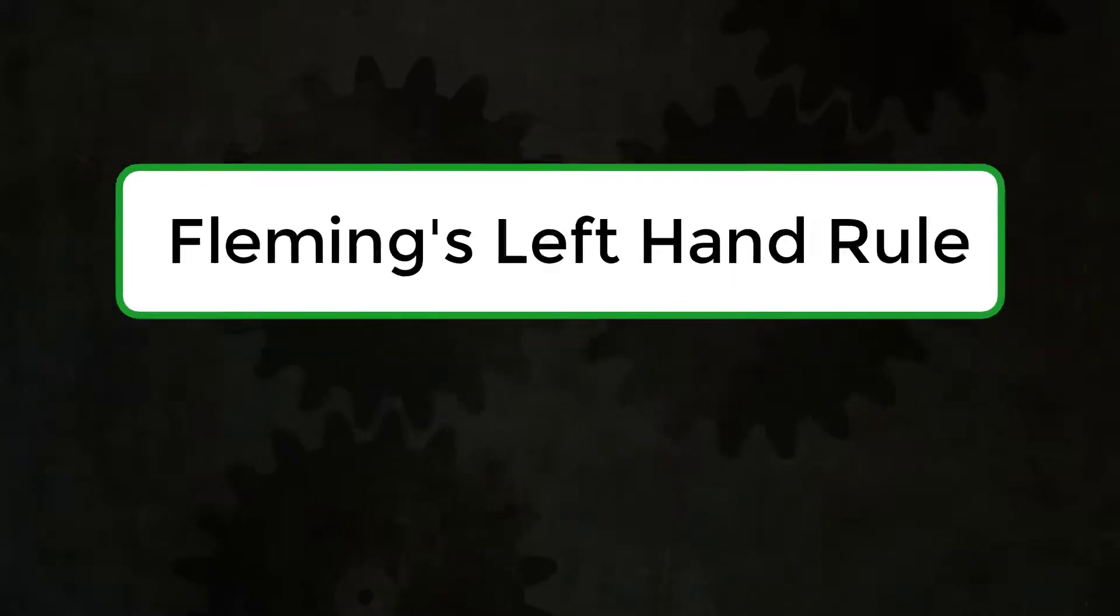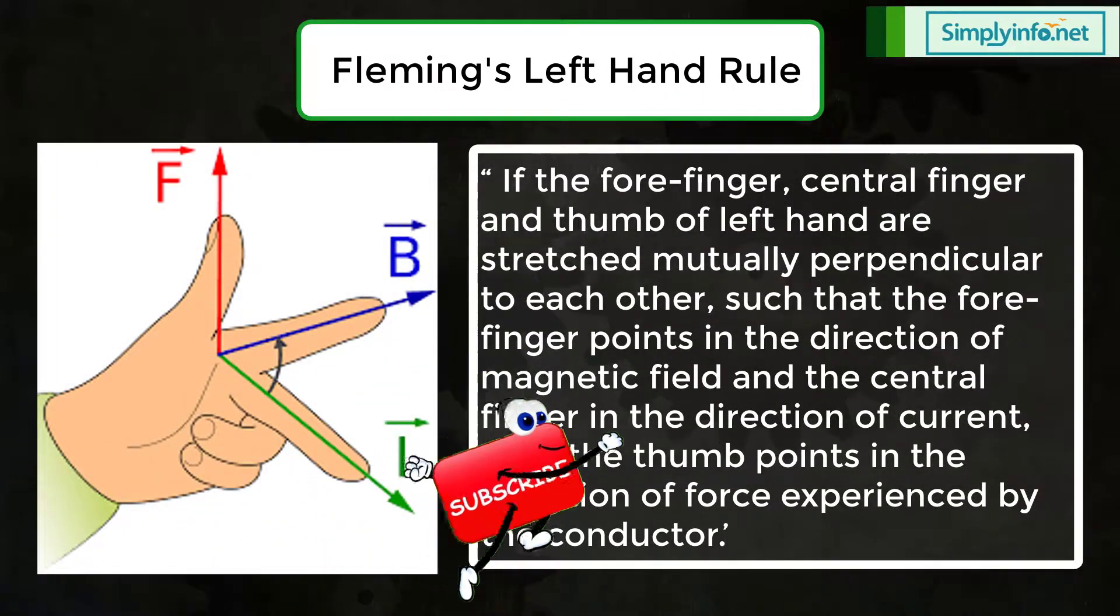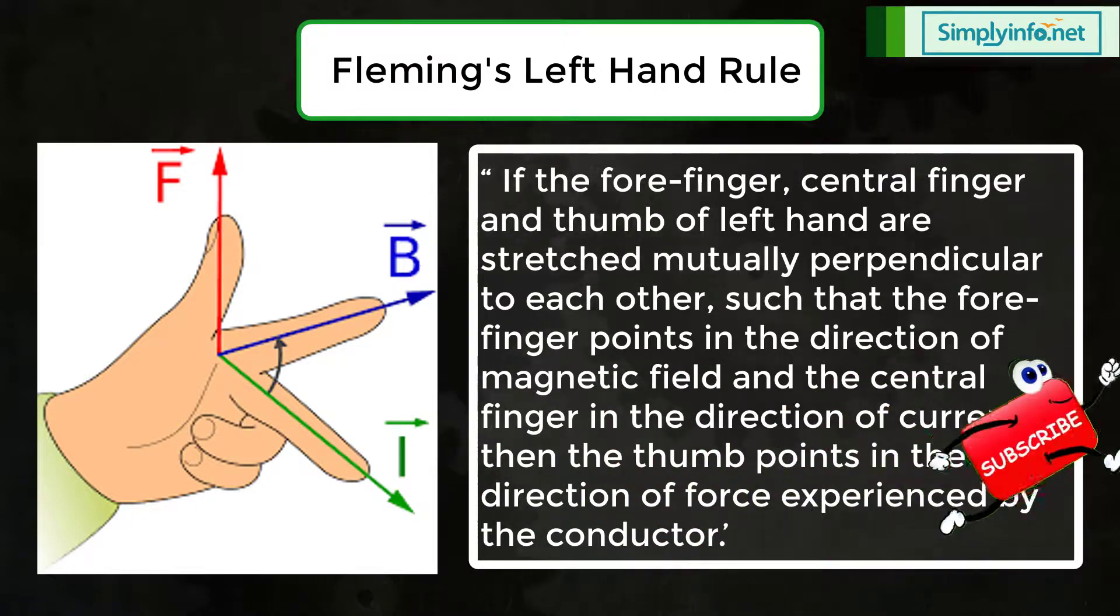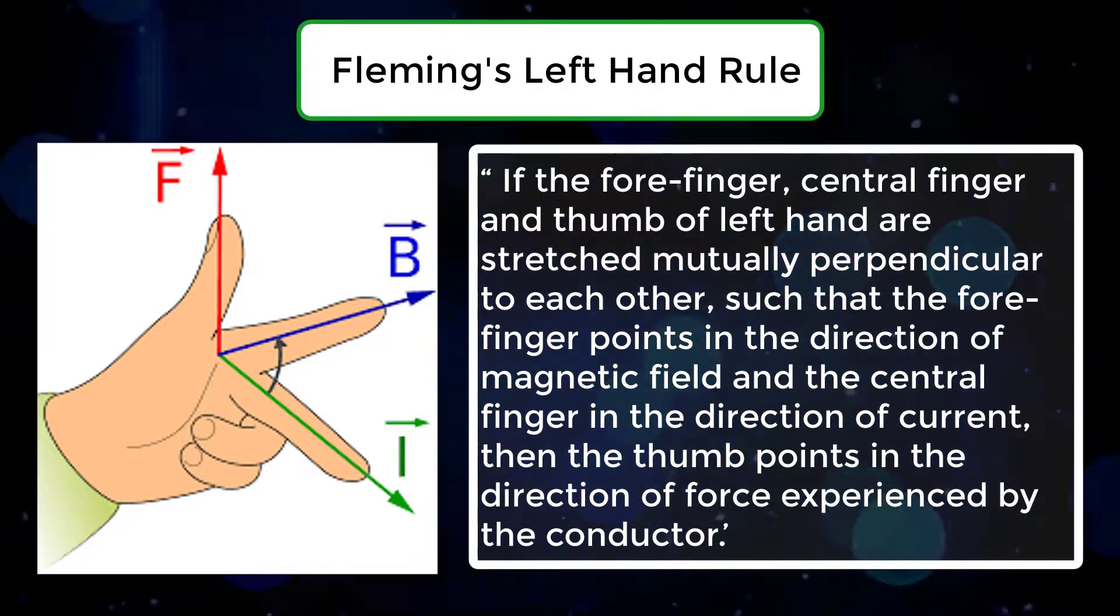Fleming's left hand rule: if the forefinger, central finger and thumb of left hand are stretched mutually perpendicular to each other such that the forefinger points in the direction of magnetic field and the central finger in the direction of current, then the thumb points in the direction of force experienced by the conductor.